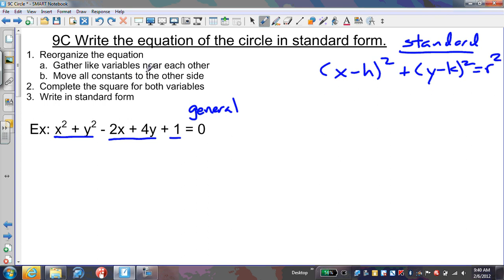The key is to reorganize the equation: get like variables together, move constants to the other side, complete the square for both variables. That's what's different about this, and that will put us in standard form.